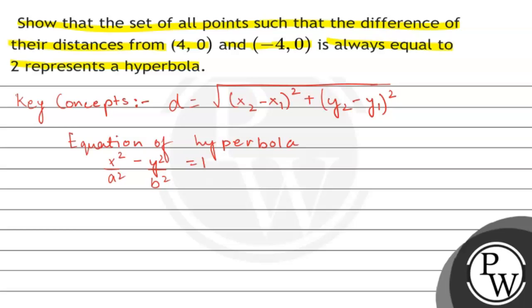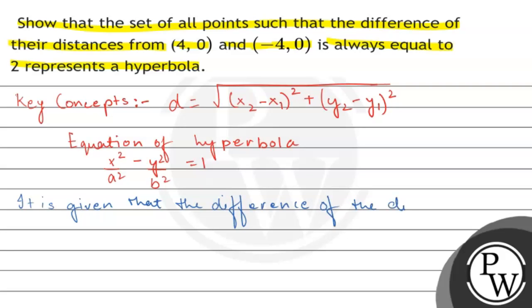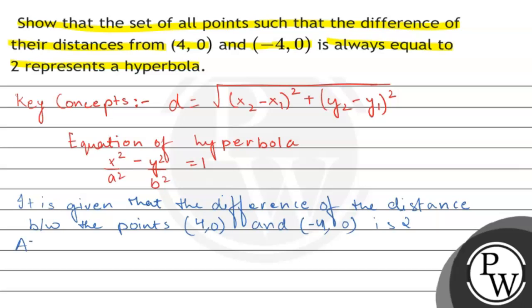If we see the question, it is given that the difference of the distances between the points (4, 0) and (-4, 0) is 2.